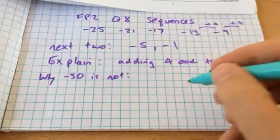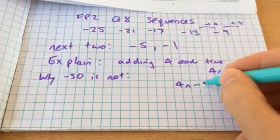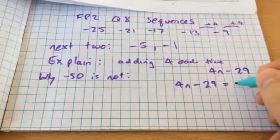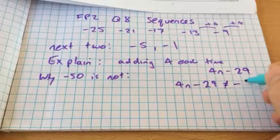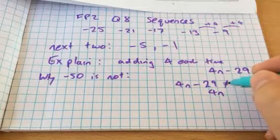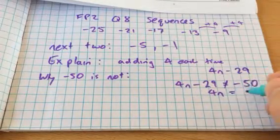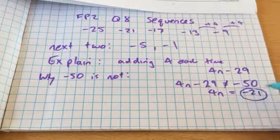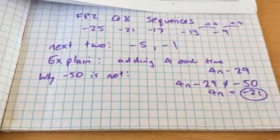Explain why minus 50 is not there. I'd again explain this with the algebra and show that this equation does not work. So 4n, in terms of giving me an integer, equal to minus 21 is not divisible by 4 exactly.